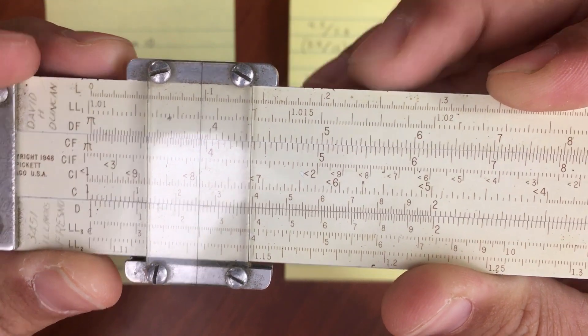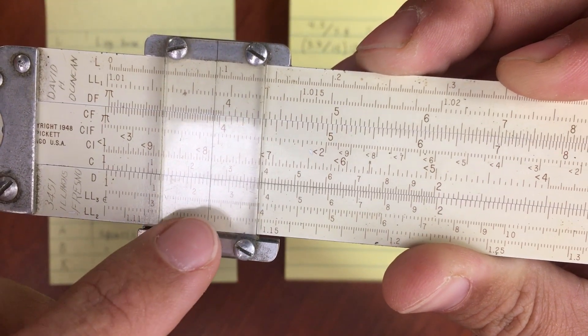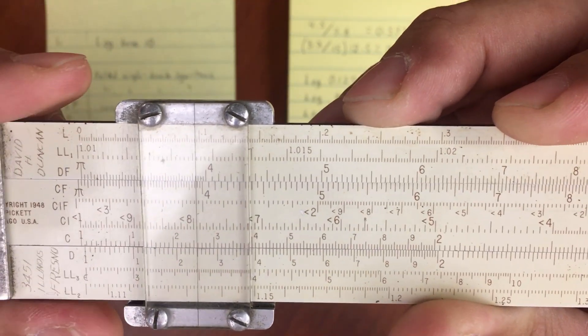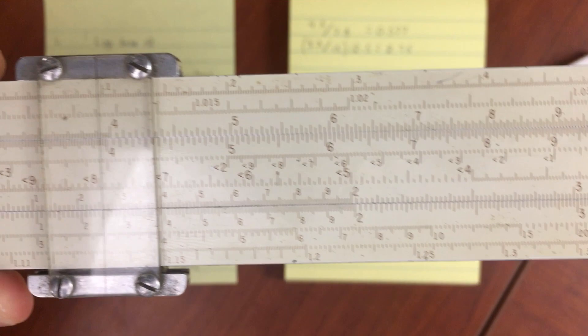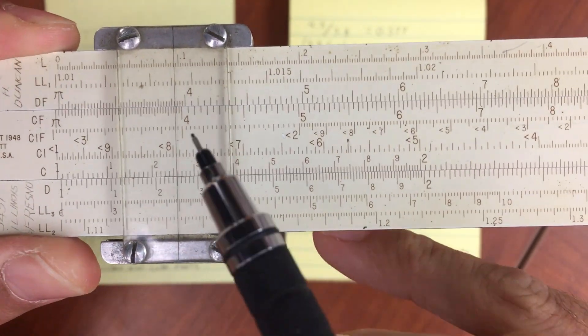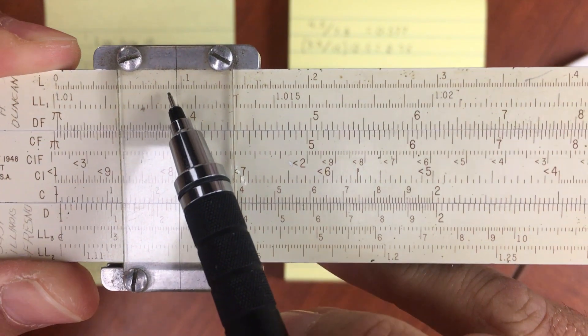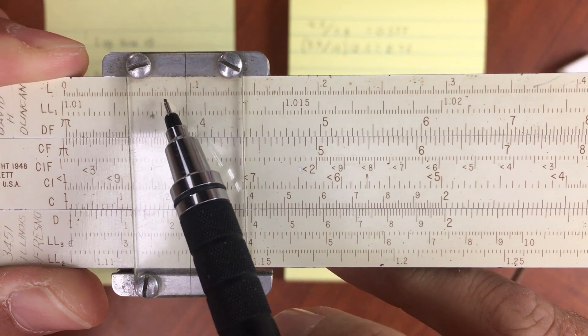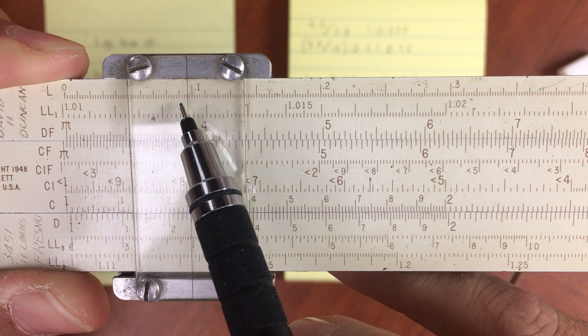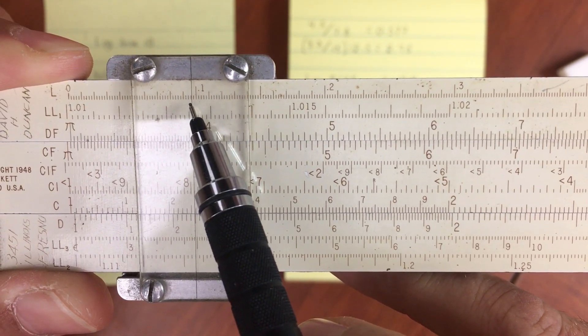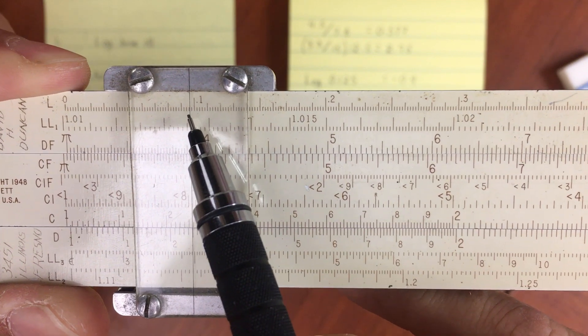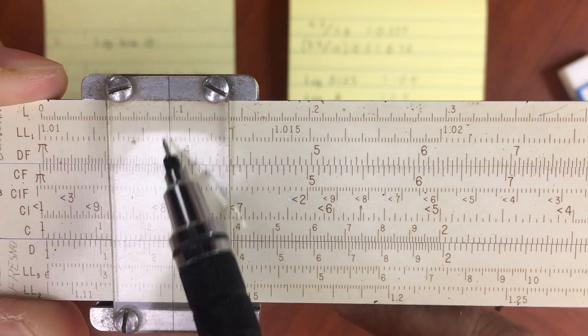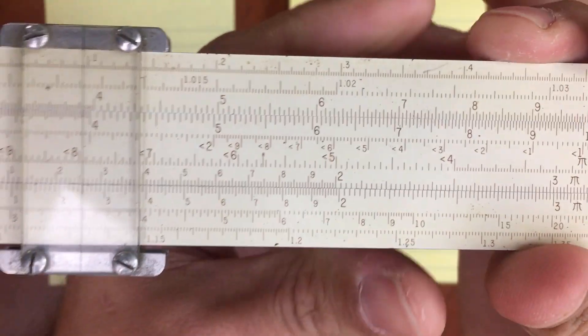So I've got point 125, point one, point two, point 125. And if I look up here on my log scale at the top, I show about point 097. But I need to subtract one from that.